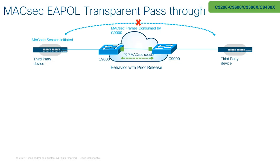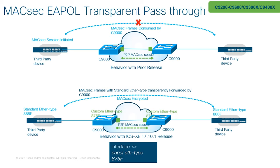With 17.10, MACsec frames can now be transparently forwarded via intermediate Catalyst 9000 switches, which enables establishing a MACsec session between third-party devices. It also allows the establishment of point-to-point MACsec sessions between Catalyst 9000 switches themselves.